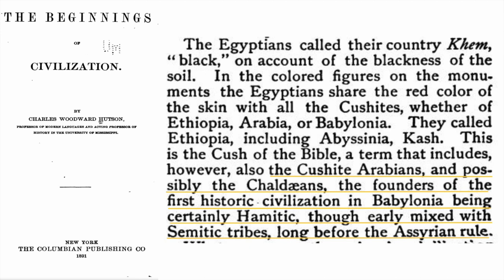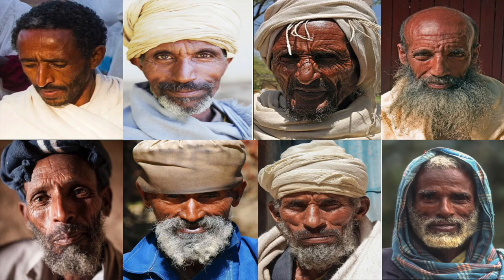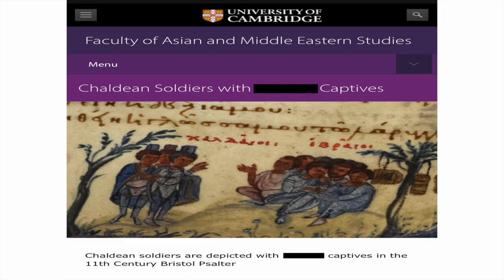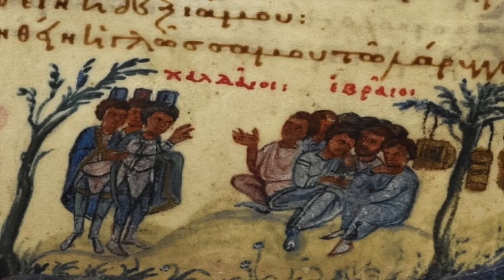According to The Beginnings of Civilization, the Kushite Arabians and possibly the Chaldeans were the founders of the first historic civilization in Babylonia, being certainly Hamitic, though early mixed with Semitic tribes. Ancient Chaldeans are described as looking like Hamites, Kushites, and Ethiopians — East African populations. Interestingly, we actually have Greek depictions of Chaldeans showing dark skin — specifically medium brown — with dark hair and eyes. It's no wonder they are described as looking like Hamites, Kushites, and Ethiopians, and this is perhaps a good representation of how Abraham may have looked.